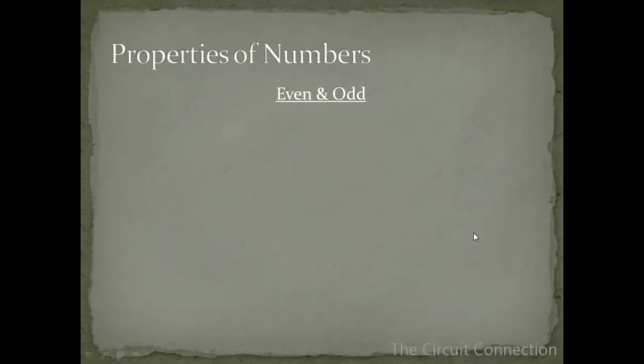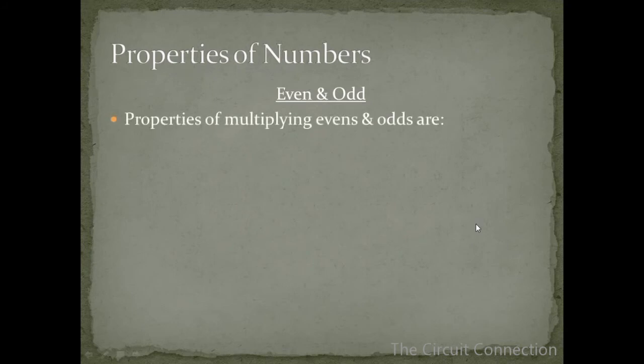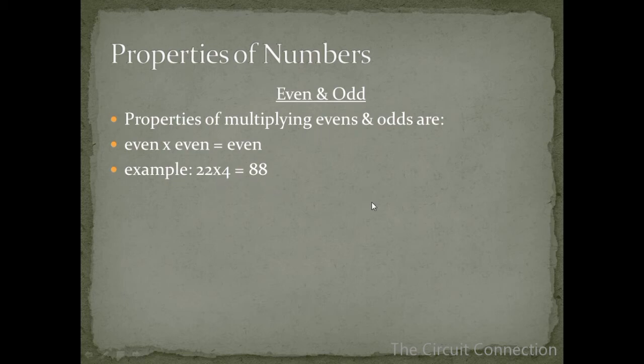Next, let's take a look at some properties of multiplying evens and odds. An even times an even will give us an even. For example, 22 times 4 equals 88. 22 is even, 4 is even and it gives us a product of 88 which is also even.